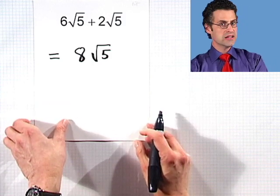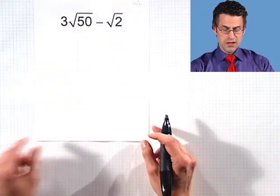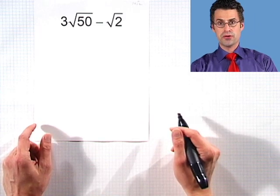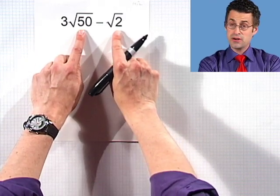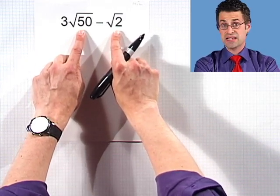Really easy. Look at the next one. Three square root of 50 minus the square root of two. Well, the square root of 50 and the square root of two are not like terms, so I can't combine them.